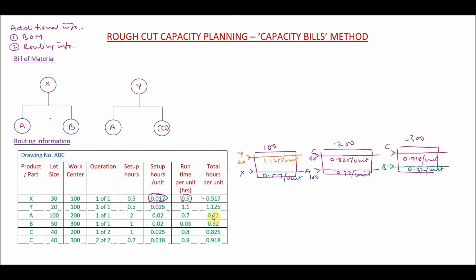This method provides a good idea of the actual standard hours each product will use at each work center. As part of this rough cut capacity planning, we are trying to find out how much of the capacity of each work center will be required to meet a certain production schedule — the master production schedule. We have taken the products, broken them down into components, and found out how much time each part requires on each work center. This data is shown in terms of each part or product and how much time they take on each work center.